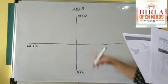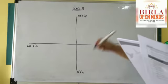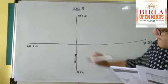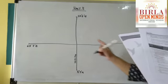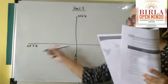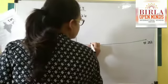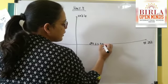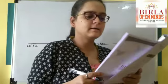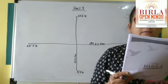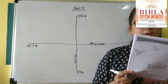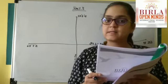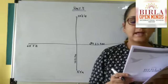From north to south, India is 3,214 kilometers. From east to west, India is 2,933 kilometers. On the world map, India is located in the northern and eastern hemisphere. India lies at the center of the southern part of Asia, at the head of the Indian Ocean.